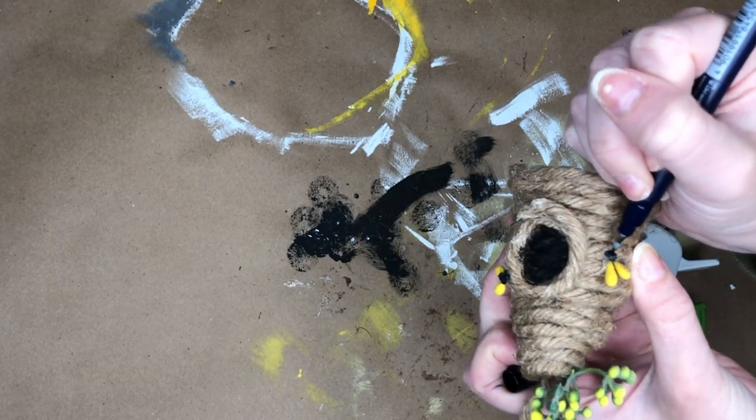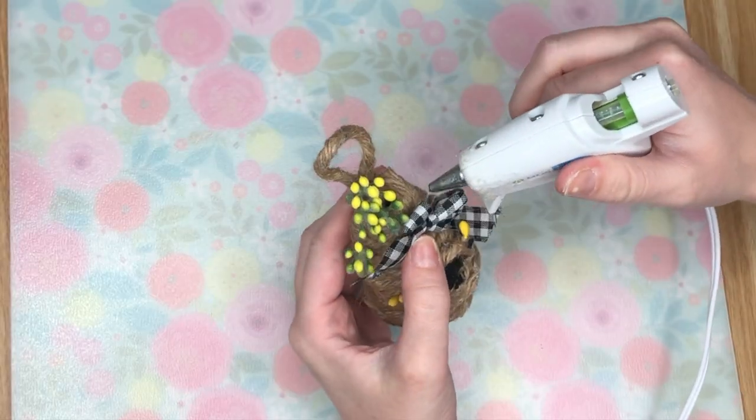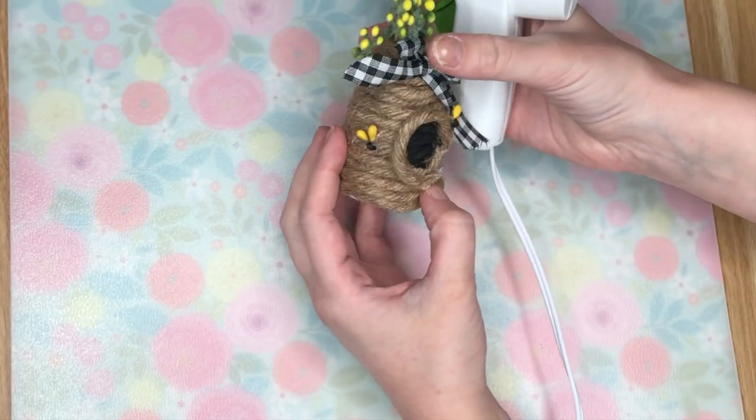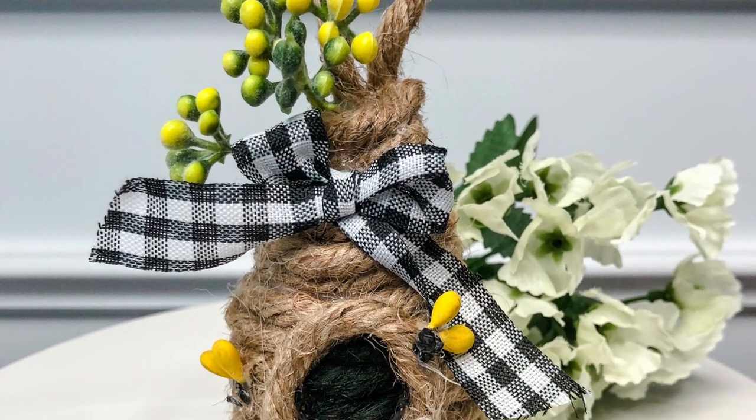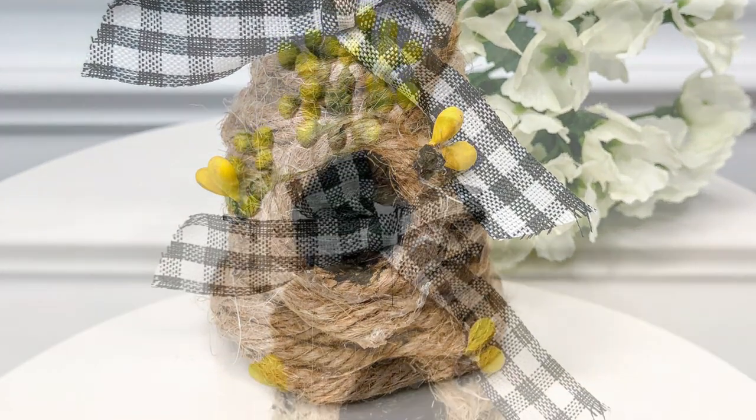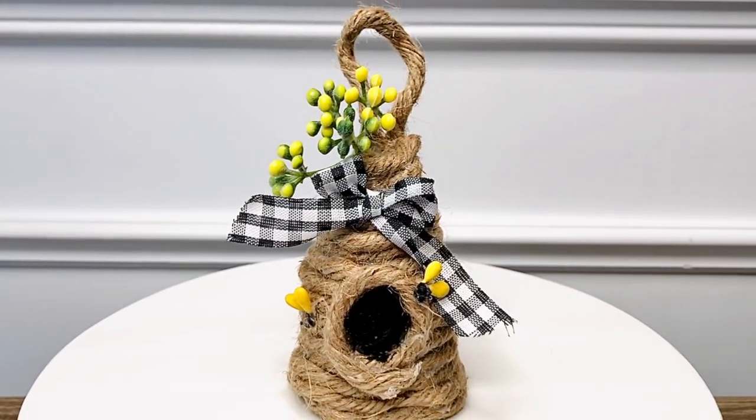I did the same thing adding another little bumblebee and also added a little bit of florals at the top and a small gingham ribbon. I absolutely love how this DIY came out and I think it's the perfect size to fit on a tiered tray.